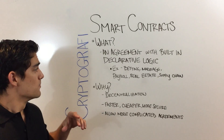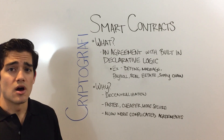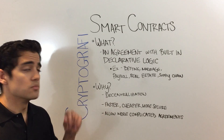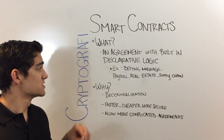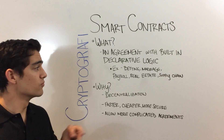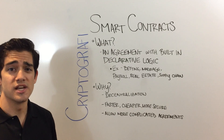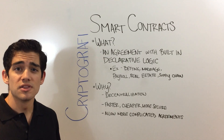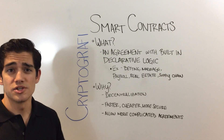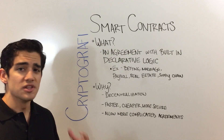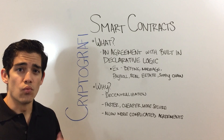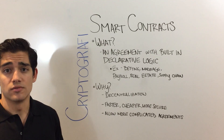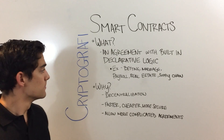A lot of things can be automated into smart contracts — from betting, marriage contracts, payroll, real estate, and supply chain. Really, the sky's the limit. If you can think of the logic, or think of a state where you'd want to have a contract, you can make it into a smart contract.